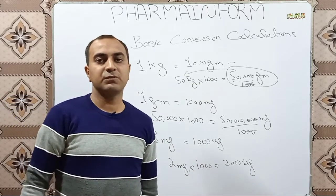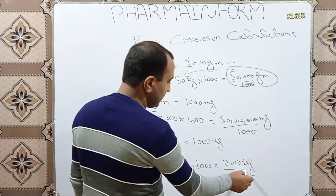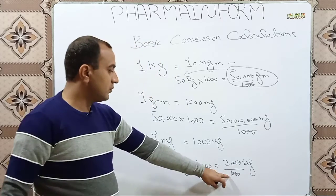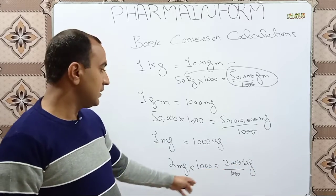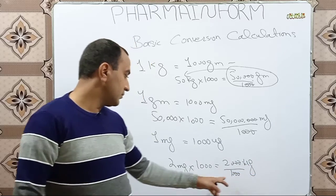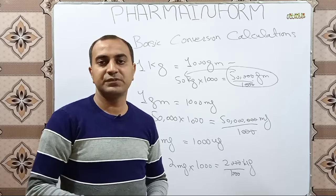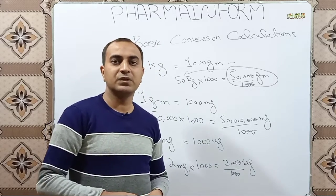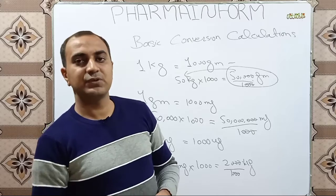In the same way, if we want to convert micrograms into milligrams, simply divide the microgram quantity by one thousand and the answer will be in milligrams. I hope you are now familiar with these basic calculations. If you have any confusion you can ask in the comment box, and if you like the video share it with others and do subscribe to our channel. Till the next video, Allah Hafiz.